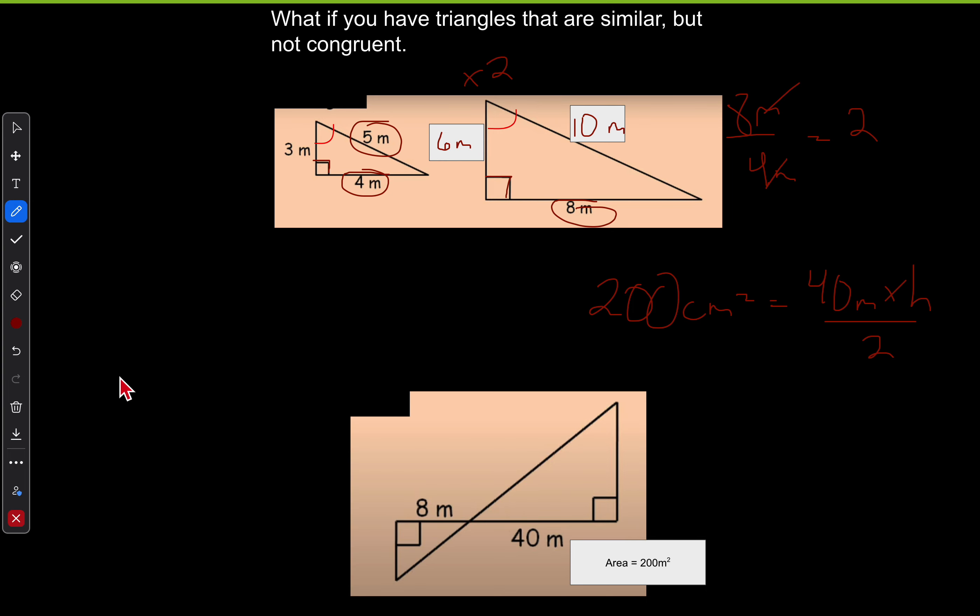So going backwards through BEDMAS, because I want to isolate that H, I am going to multiply both sides by two. So this is 400 now meters squared, and this is 40 meters times H. And now I'm going to divide both sides by 40.